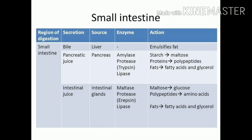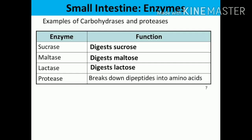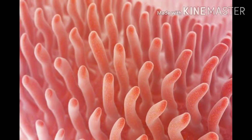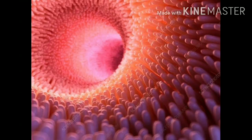The small intestine also releases its own digestive juices containing peptidases, maltase, sucrase, lactase, and lipase, which complete digestion. The soluble digested food is then absorbed into the blood through numerous finger-like projections called villi on the inner lining of the small intestine. These villi are lined by thin capillaries through which soluble products are absorbed and supplied to every cell in the body. Undigested and waste materials move on to the next organ.